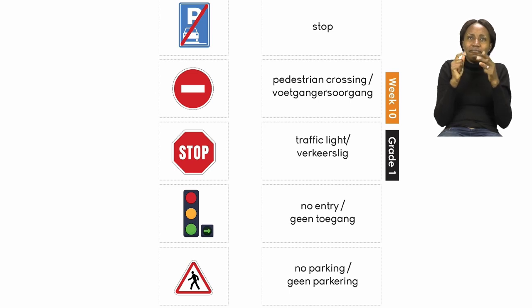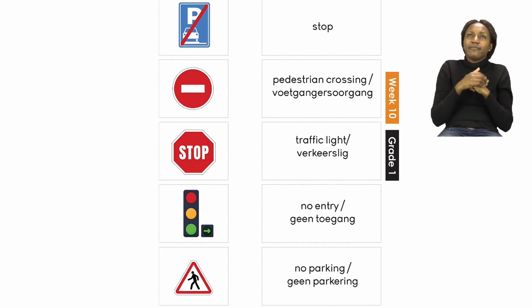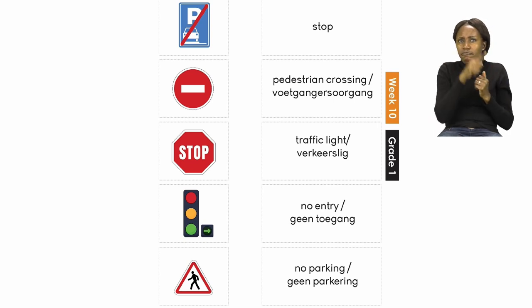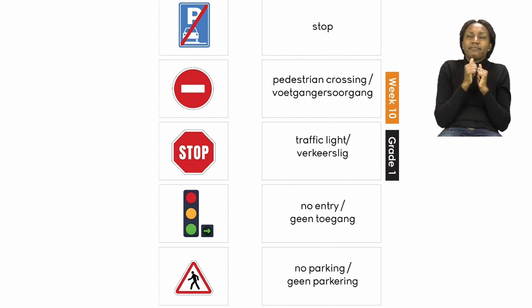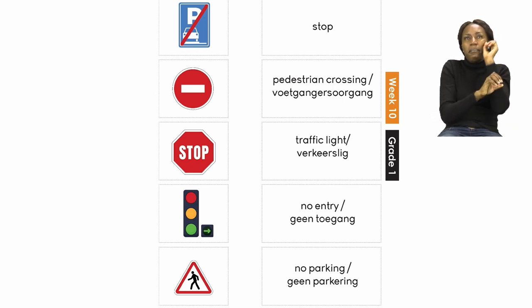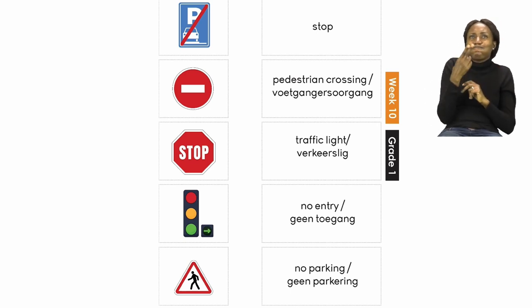The next one says pedestrian crossing. Remember, pedestrian is a special name we give to people who are walking. Which road sign shows us a pedestrian crossing? Good job. Please draw a line to that one. Make sure your lines are neat. Now the rest of them you are going to figure out by yourselves: traffic light, no entry, and no parking.